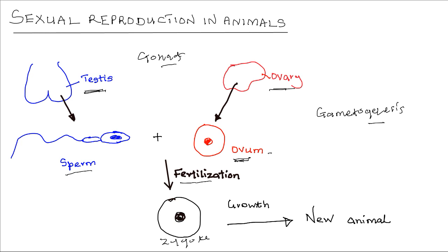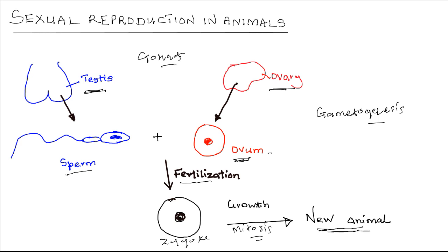The zygote then undergoes growth through the repeated process of mitotic cell division to form the new animal. From one cell, through repeated mitotic cell division, billions upon billions of cells are formed which constitute the body of the new animal. And that's how, in a nutshell, sexual reproduction takes place in animals.